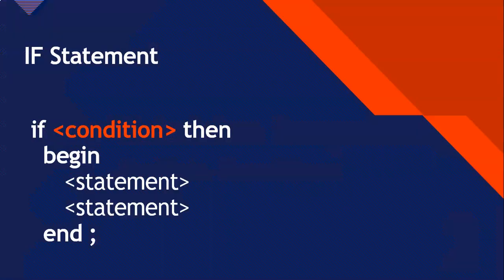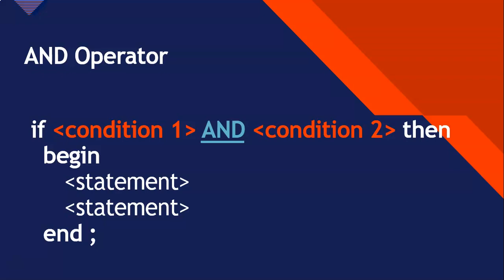In the last lesson we learned about an if statement — if you've got a condition, we'll execute the following statements if that condition is true. What happens if you've got more than one condition that you need to meet? In that case, we can use operators that join conditions together. The first one we're going to learn about is the AND operator.